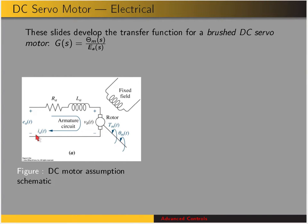Across those terminals is the applied voltage EA. RA is the armature resistance, LA is the armature inductance, and VB is what's referred to as the back EMF. The output of this system is shown here — we have torque and displacement, so theta_M and tau_M.